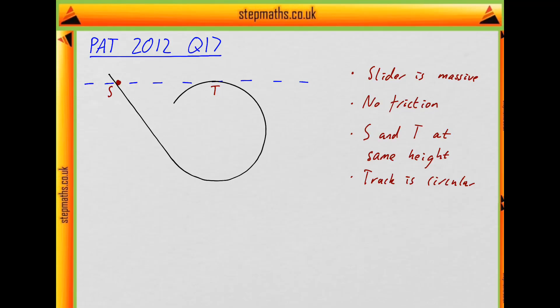This is question 17 from the 2012 PAT. In this question we have a slider moving along the track. We're told the slider has mass, there's no friction with the track. The starting point S and the point T at the top of the curve are at the same height as shown by this line. And also this part of the track is circular.